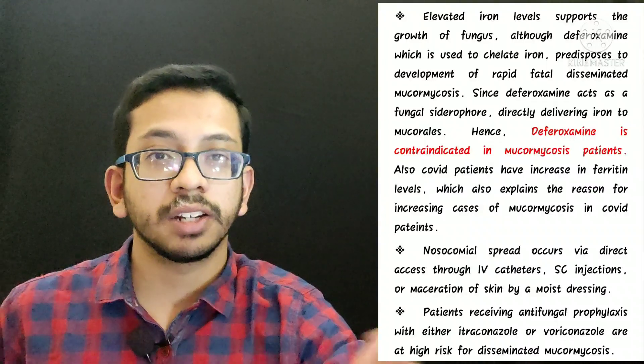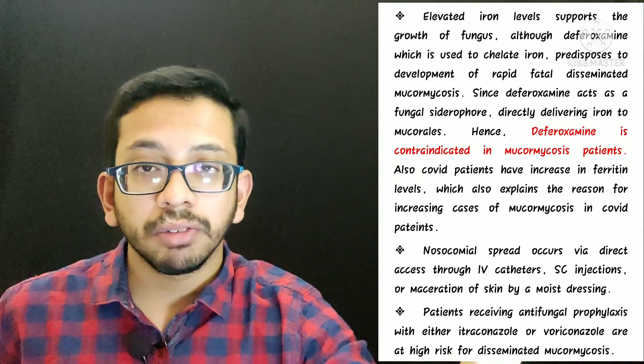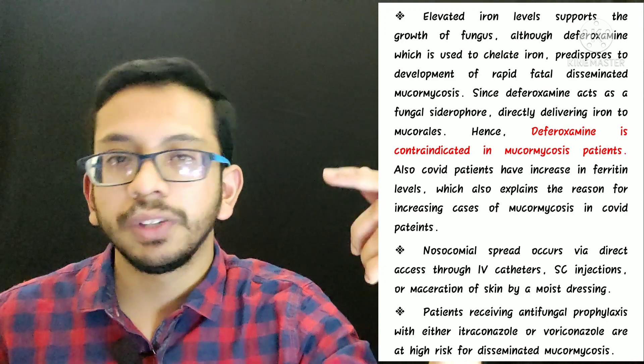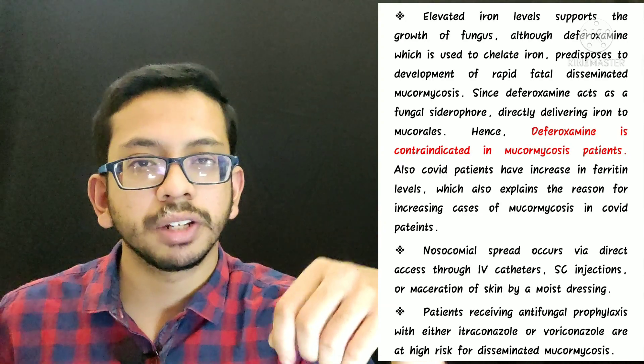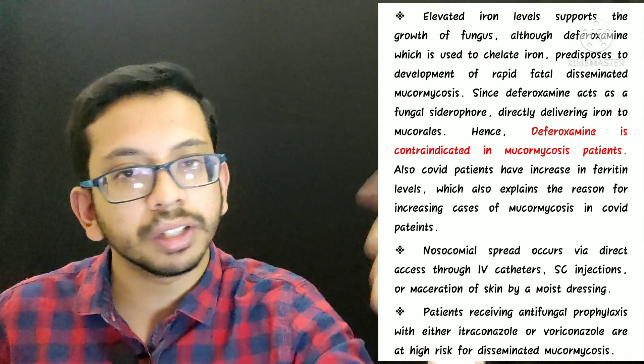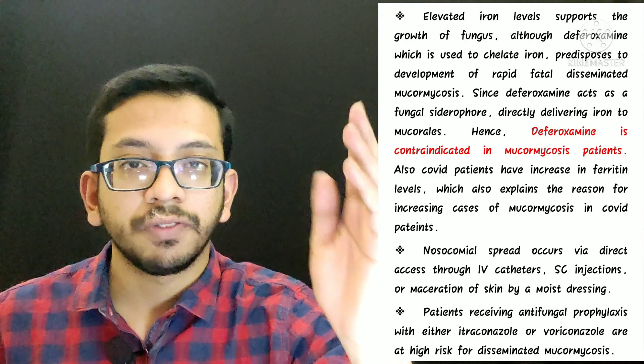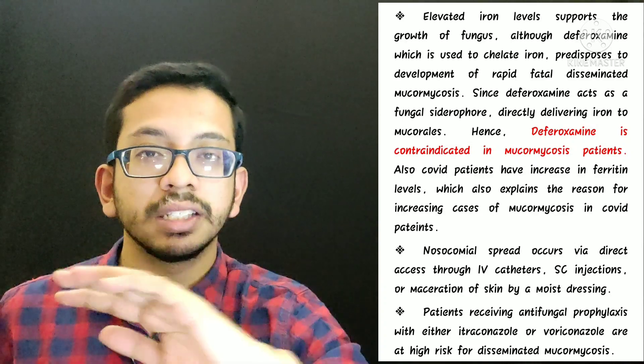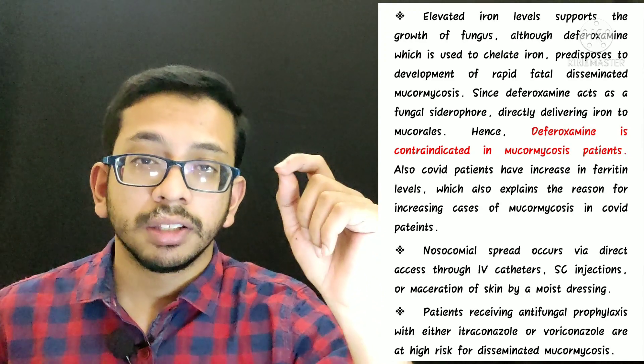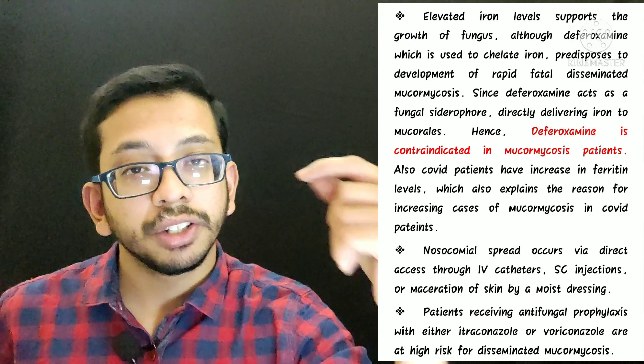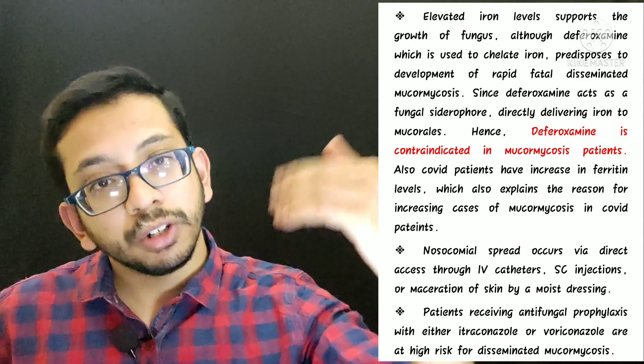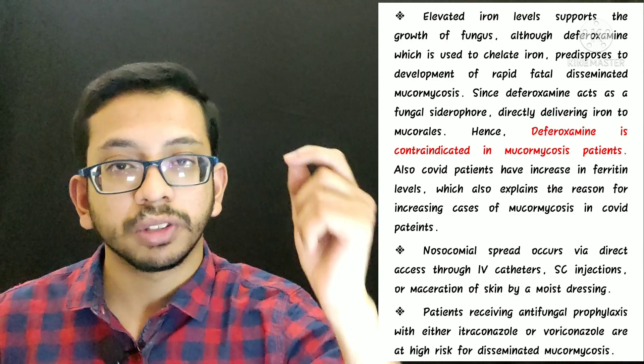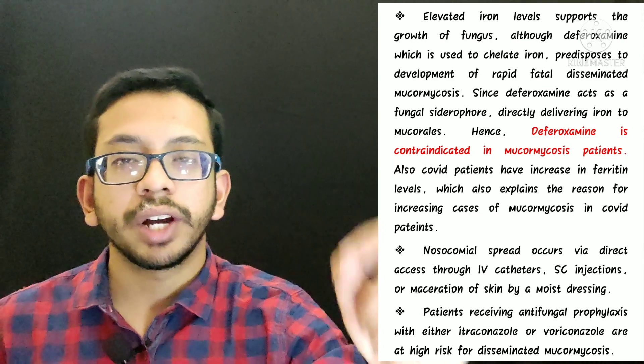Now, a few more things that if left can cause disaster. As I said, elevated level of iron is a very important risk factor for mucormycosis. This may make you think that if I give deferoxamine, which is an iron chelator, then it will decrease the risk of mucormycosis infection. But this is not the fact. If you give deferoxamine to a mucormycosis patient, it may actually increase the risk of disseminated mucormycosis, because the iron chelator deferoxamine acts as a fungal siderophore, which directly transports iron to the fungus and enables its growth even more. So deferoxamine is absolutely contraindicated in mucormycosis patients. Again, I am repeating: deferoxamine is absolutely contraindicated in mucormycosis patients.